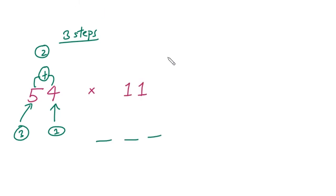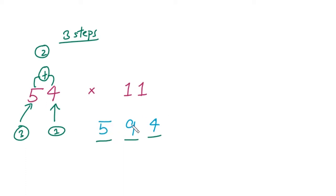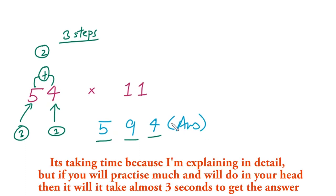Let's do this. First step: write the last digit as it is, so we write 4. Second step: add 5 plus 4, which is 9. Third step: write the first digit, so we write 5. Our answer is 594. You can check it.